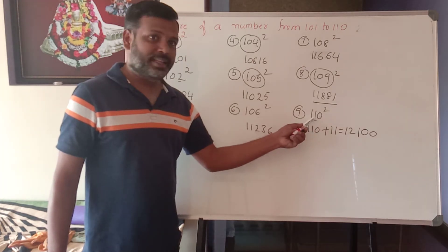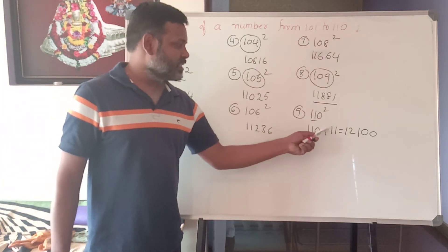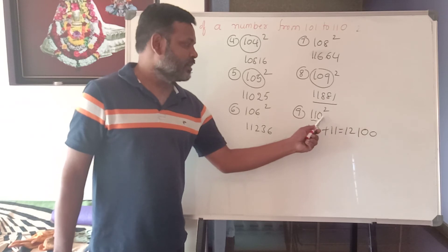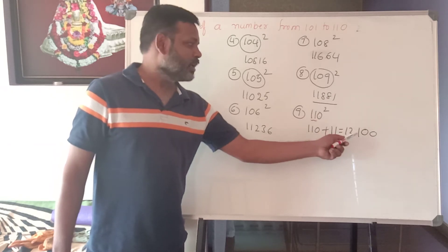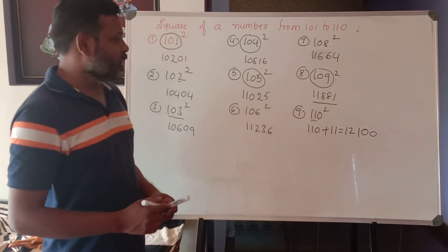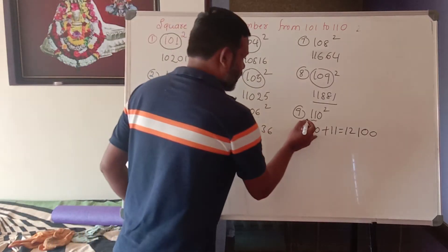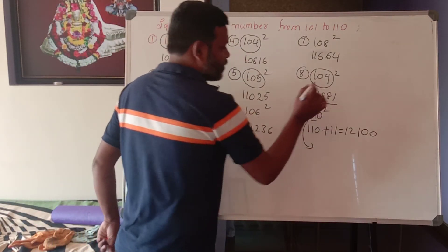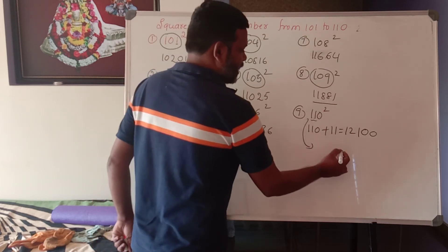What happens here? What happens here? What happens here? 121. So, 110 plus 11 is equal to 121. 10 square is equal to 121. 110 square.